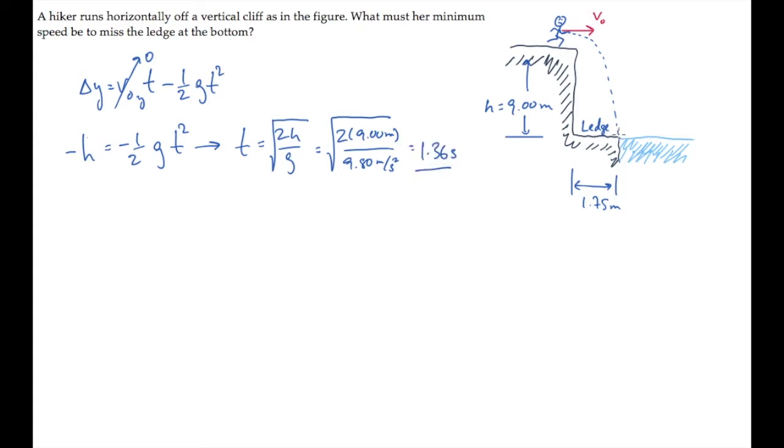During that time, she needs to move sideways a distance equal to the width of the ledge. We can use the horizontal equation now, delta x equals v0x times t. Noticing that v0x equals her initial speed, v0, because she's running horizontally.